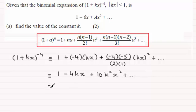And this compares quite nicely to what we've got here: 1-6x then plus ax² and so on. And we've got to work out then the value of the constant k and we can easily do this just by comparing the coefficients of x.